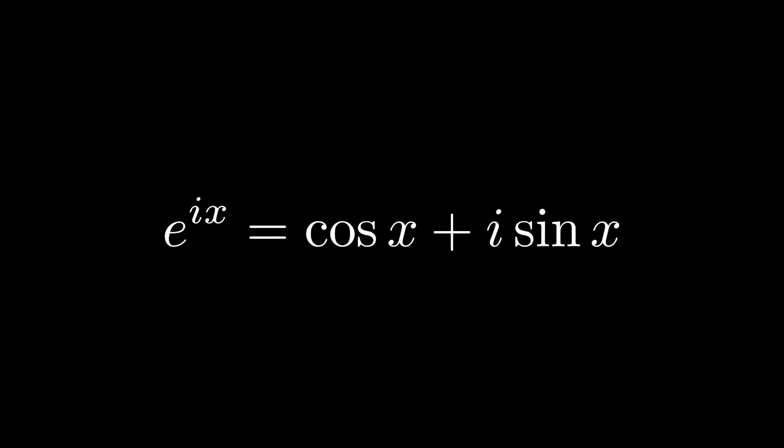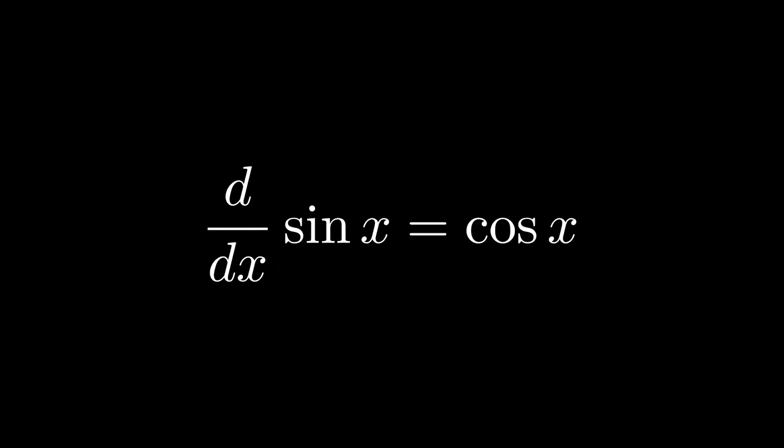Why do trig functions appear in Euler's formula? This was the question I had when I first saw Euler's formula. This connection between trigonometry and exponents seems so unexpected, especially along with complex numbers. To answer this question, we must journey into the intricate and beautiful mathematical relationship between trig functions, E, and complex numbers.